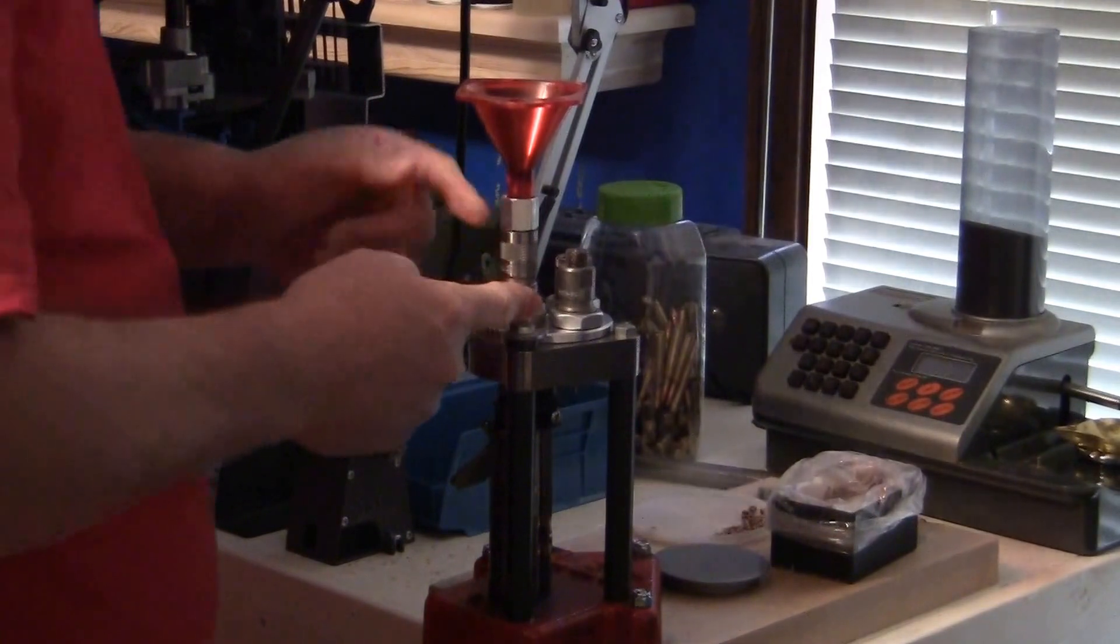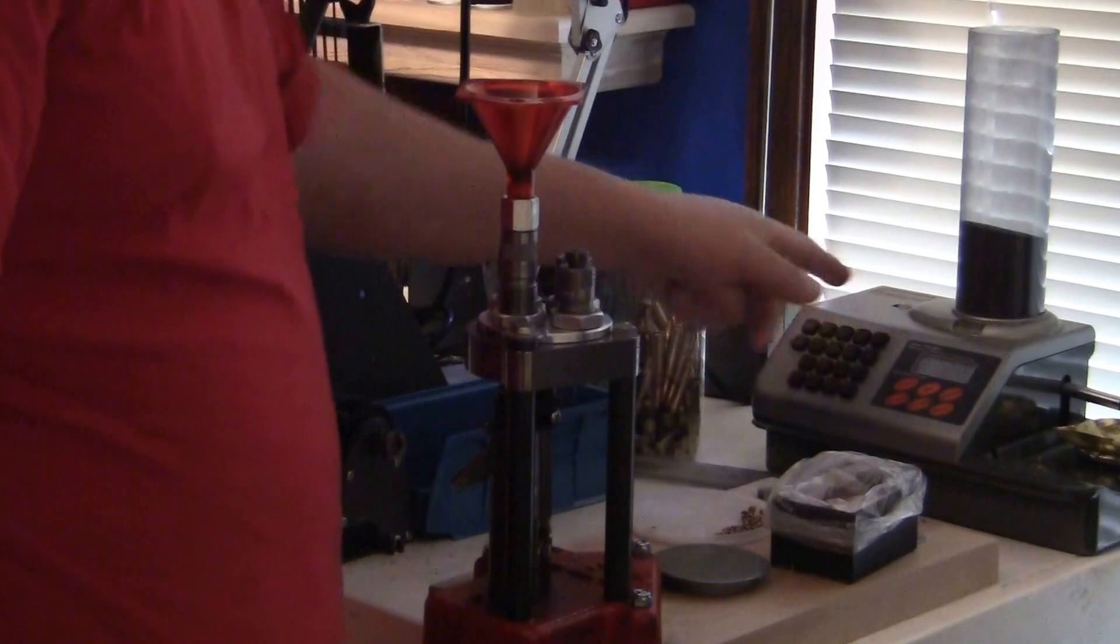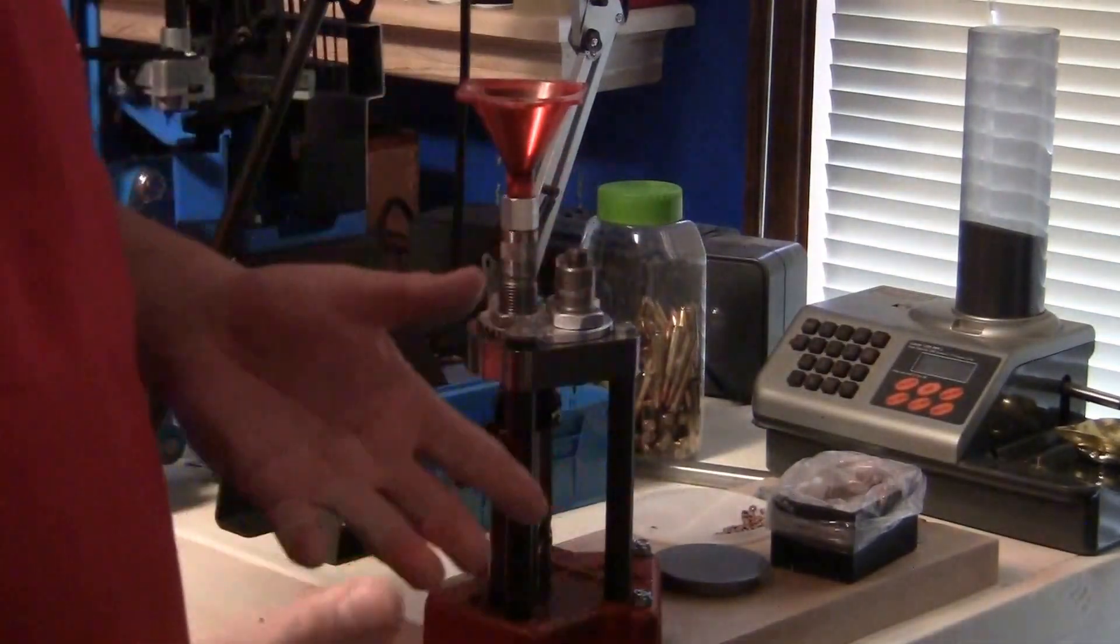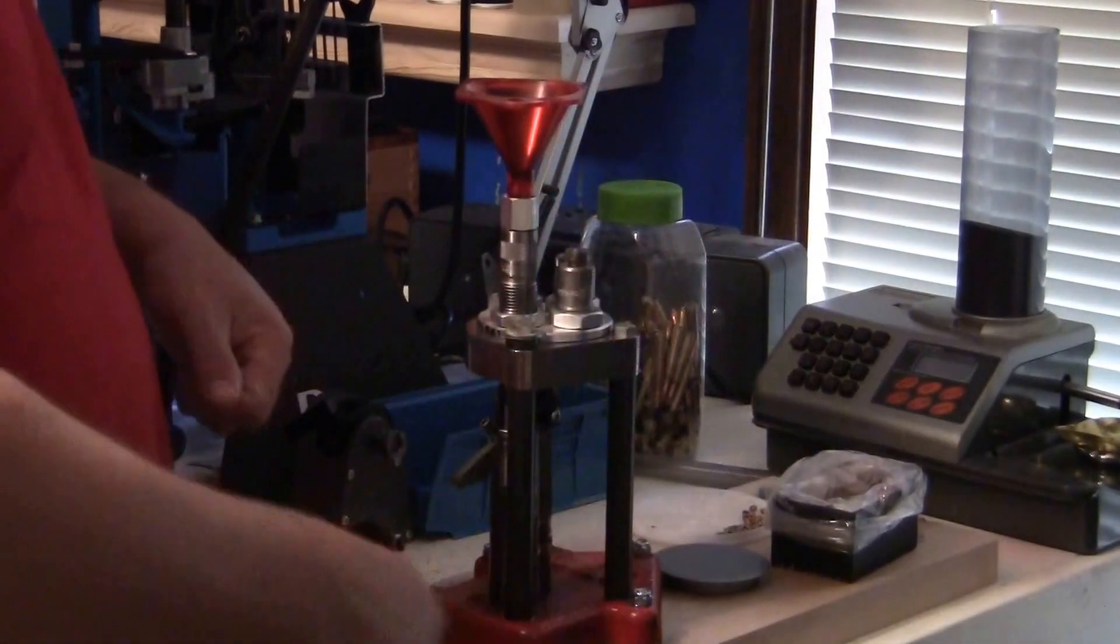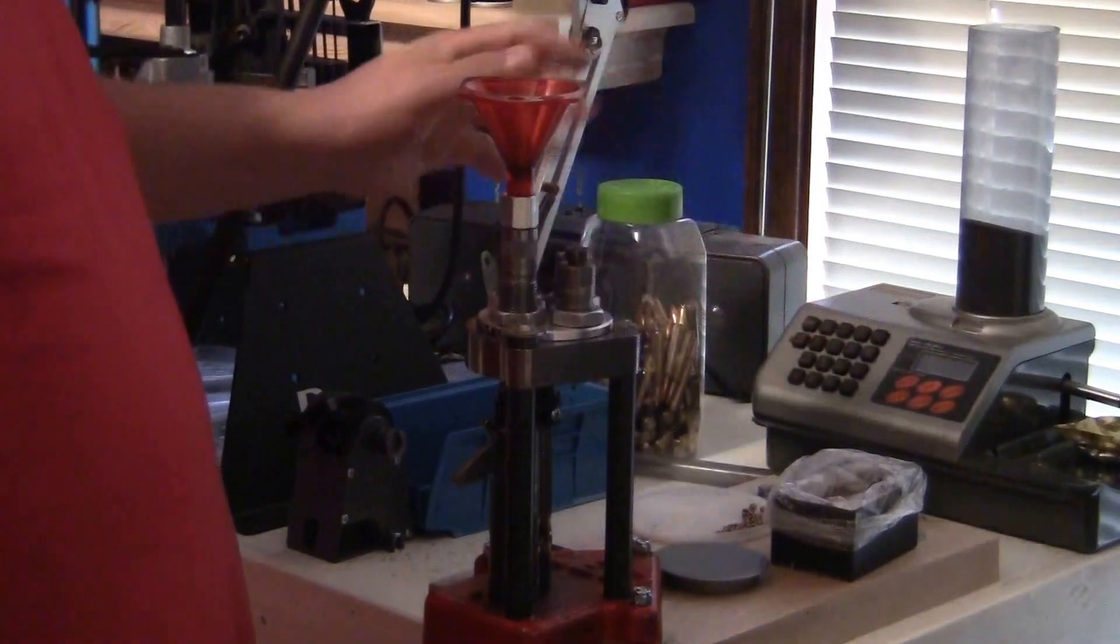Now I'm going to come into the rifle charge die. I'm going to punch in 24.9 grains. I can set that on auto-index where it does it each time, but whenever I'm moving this it'll accidentally bump powder in there, so I'm just going to do it individually.